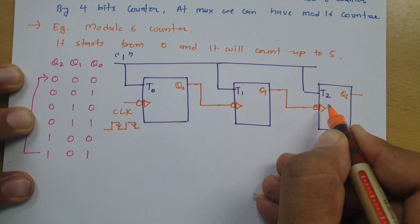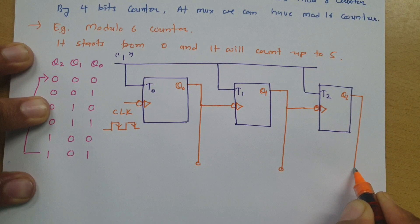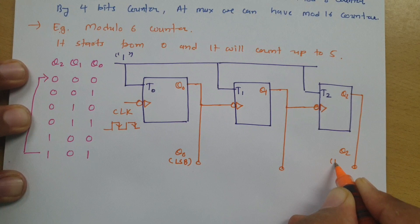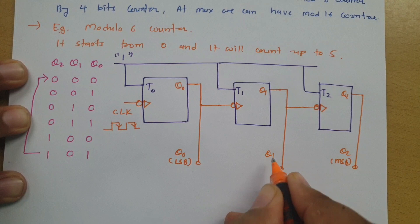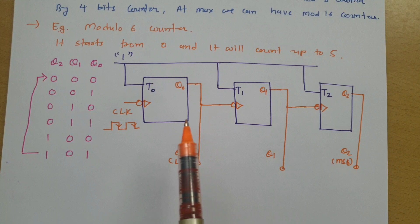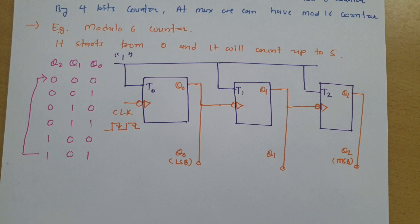Observing the outputs: Q0 is the LSB and Q2 is the MSB. As per this flip-flop connection, the circuit naturally counts from 0 to 7. However, our goal is to count only from 0 to 5, so when the count reaches 1-0-1 (which is 5), it should jump back to 0-0-0.